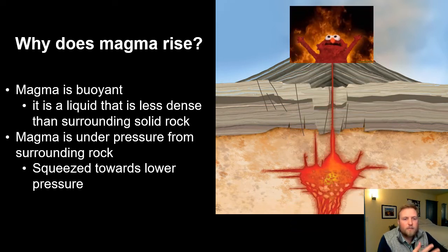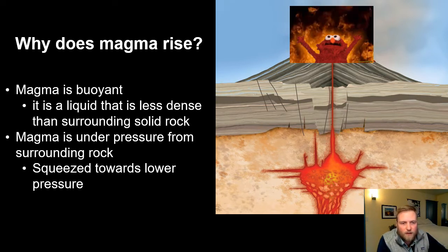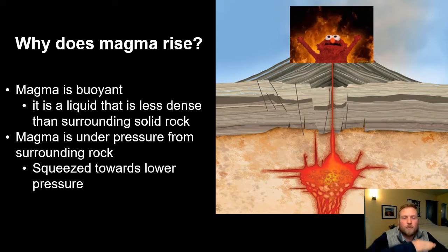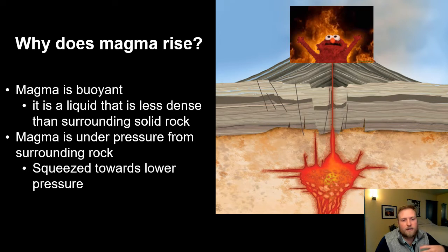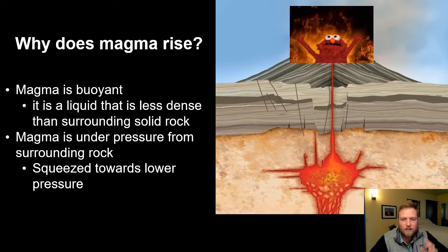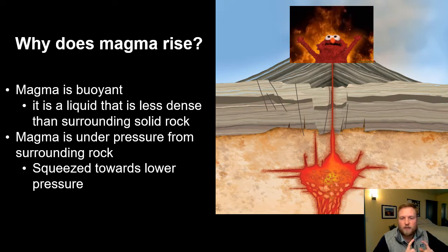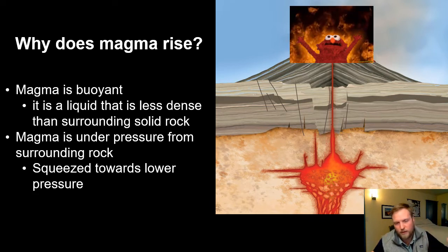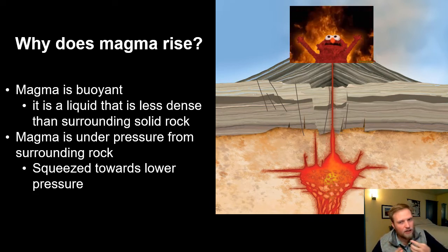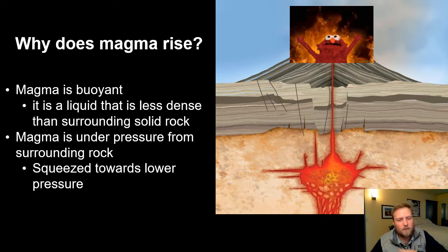So why does magma rise? Magma rises because it is buoyant — it's a liquid and therefore less dense than the surrounding solid rock. Less dense materials float up on top of more dense materials, just like oil on water. The other factor is that magma is under pressure from the surrounding rock, so when it's squeezed the liquid goes towards the path of least resistance.